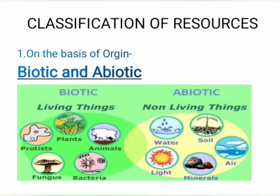These resources have a wide classification. Resources are classified into four ways. The first is on the basis of origin. On the basis of origin, resources are classified into two: biotic resources and abiotic resources. Biotic means living things — it includes plants, animals, fungus, bacteria, etc. Abiotic resources means non-living resources — that means water, soil, air, minerals, etc.